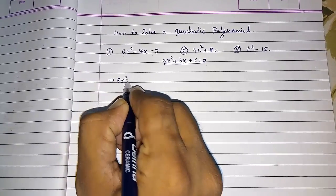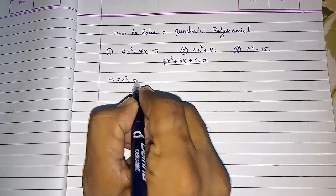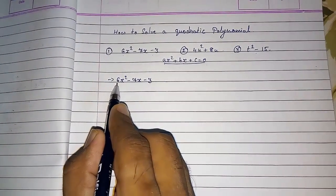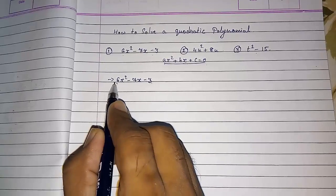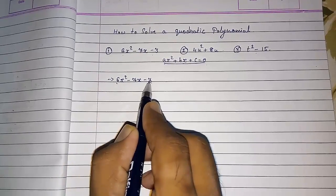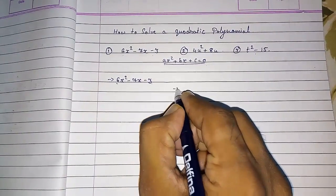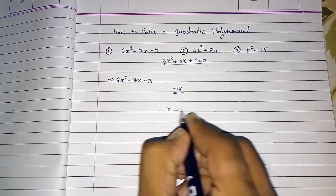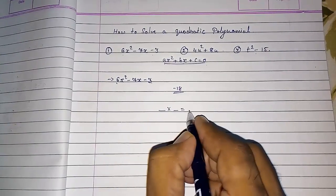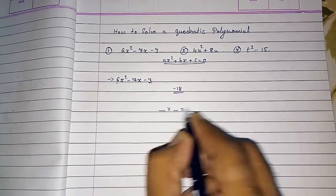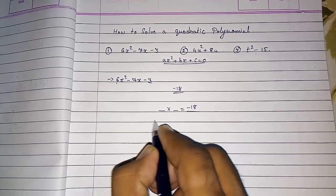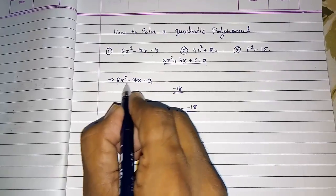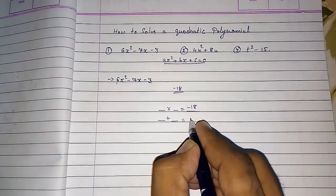They have given us 6x² - 7x - 3. The first step is to multiply the coefficient of the first and last terms: 6 × (-3) = -18. Then we have to factorize -18 in such a way that the multiplication becomes -18 and the addition becomes the middle term, which is -7.